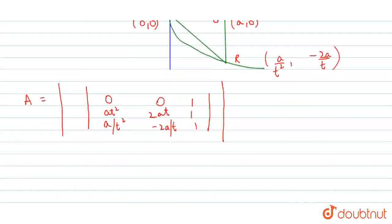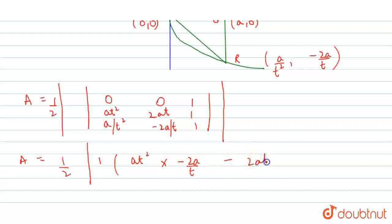Solve that equation. Area equals half times (AT² into -2A/T minus 2AT into A/T²).